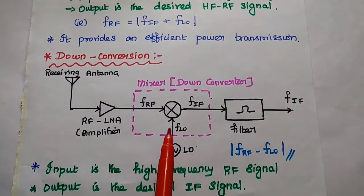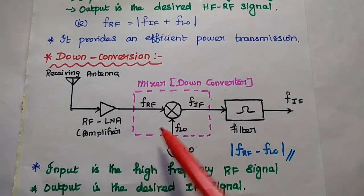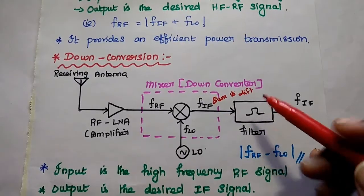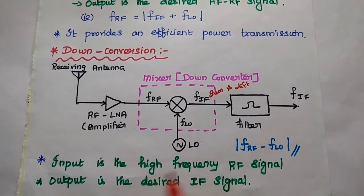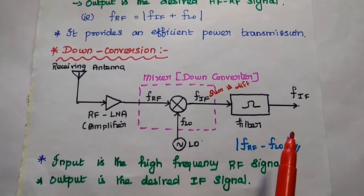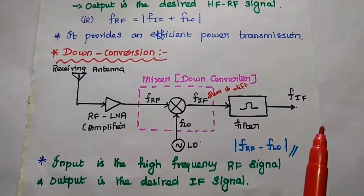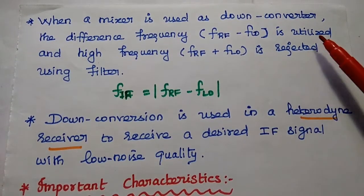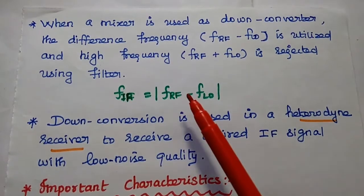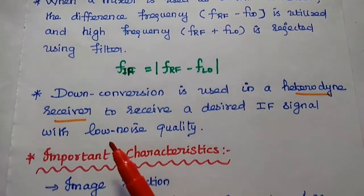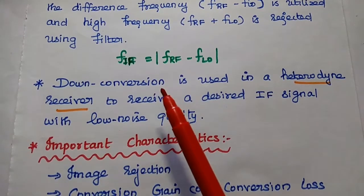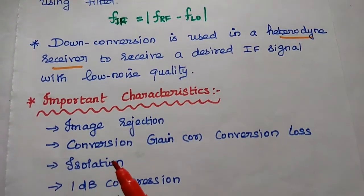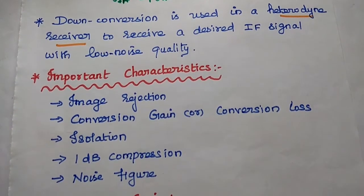The two signals are mixed and at the output we have the sum and difference frequencies. A filter is used to allow only the difference signal, which is the desired intermediate frequency signal. When a mixer is used as a down converter, the difference frequency is utilized and the high-frequency signal is rejected using a filter. This down conversion is widely used in the super heterodyne receiver to receive the desired IF signal with low noise quality, achieved using the low noise amplifier.